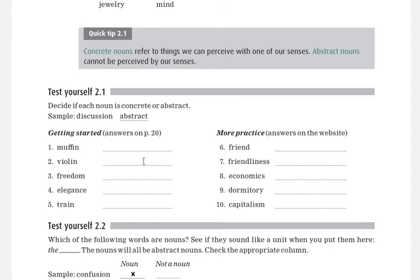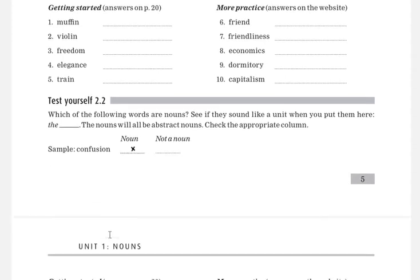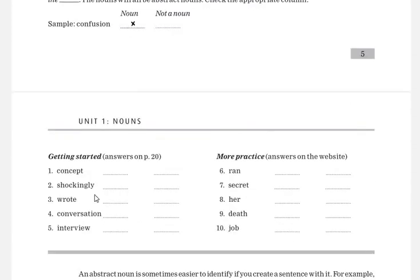The next exercise 2.2 has some nouns, and the tip is that when you put 'the' before the word, whether it looks like a unit or not. Like confusion—can we say the confusion? Yes we can, so it's a noun.